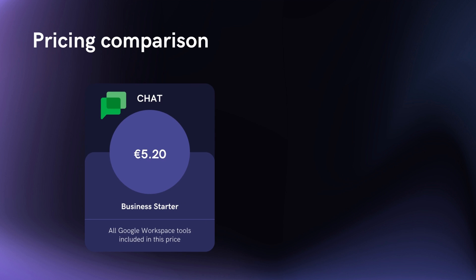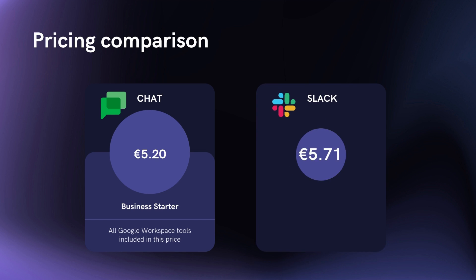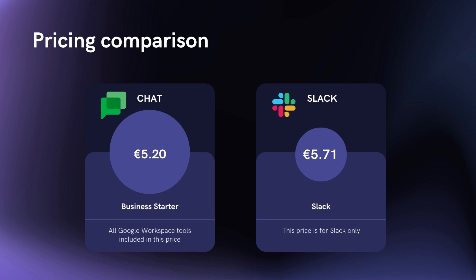Let's get into the comparison. The first thing I want to compare is price. Google Chat is part of Google Workspace, and for as low as €5.20 per user per month — which is for Google Workspace Starter — you can have Google Chat, and you also get Gmail, Drive, and Calendar. Slack has a freemium model, but their standard basic plan is €5.71 per user per month, and that's just for Slack, the messaging platform. With Google, you're getting all of the other Workspace tools as well.